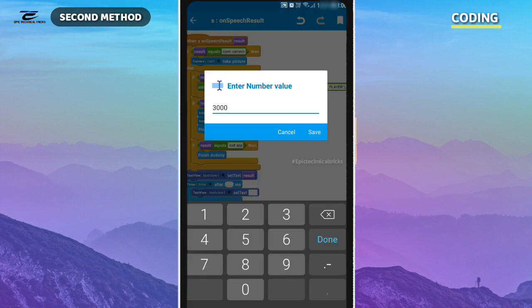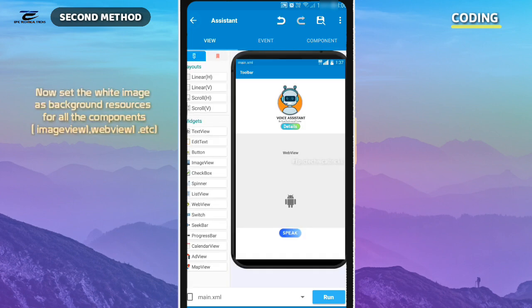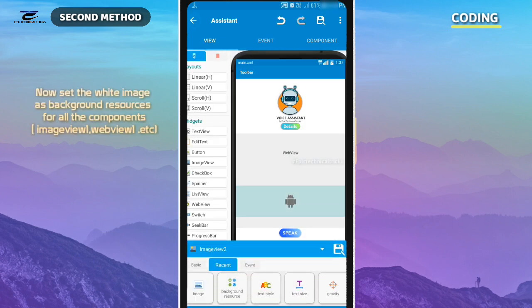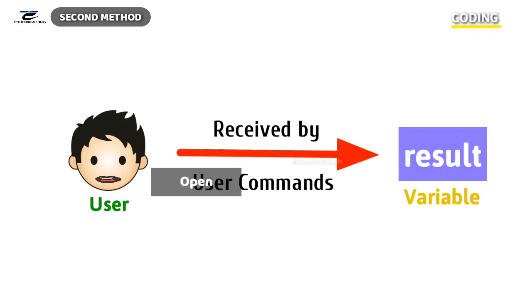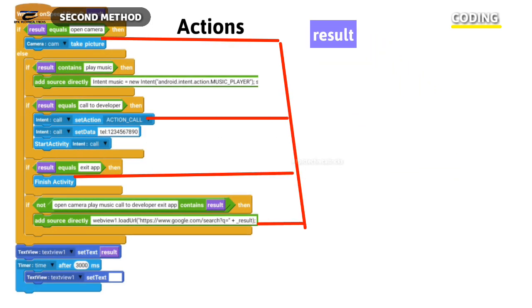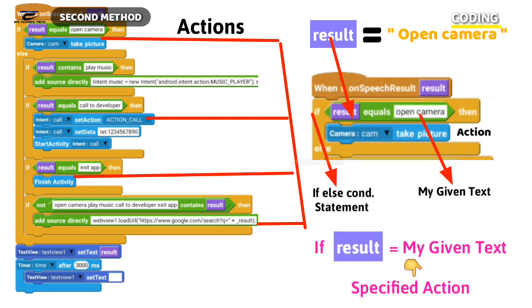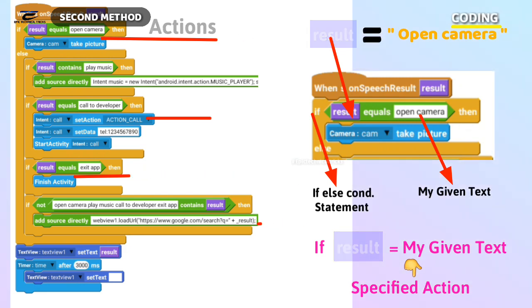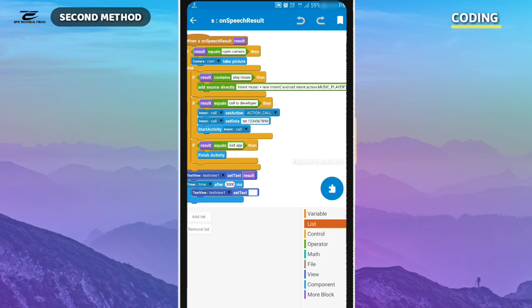After that time, the user-given commands automatically disappear from TextView one. Now let me tell you how it works: the user commands are stored in a result variable, then those commands stored in the result variable are checked one by one with the help of if-else conditional statements. When the stored command matches with my given text, then a specific action happens.